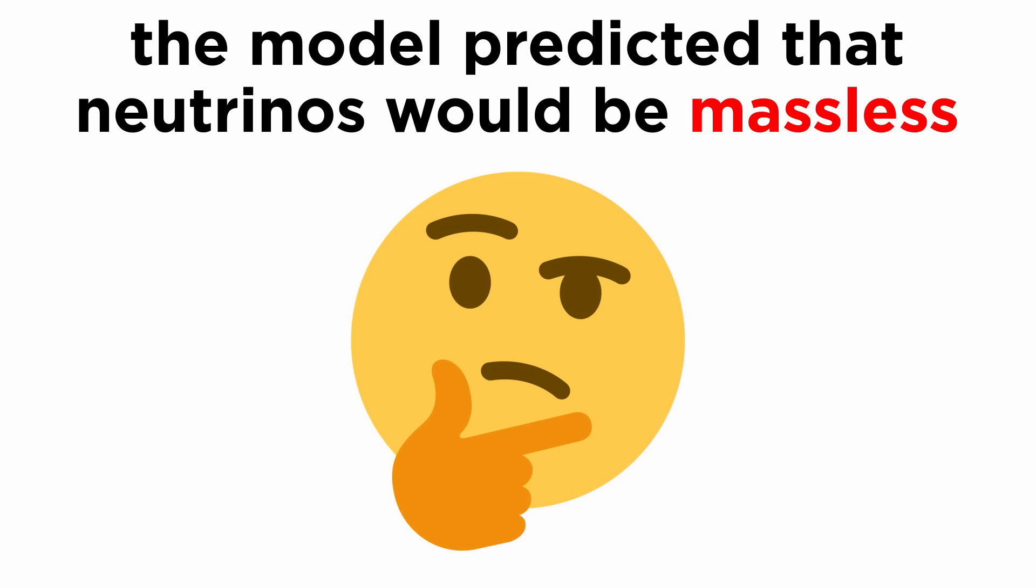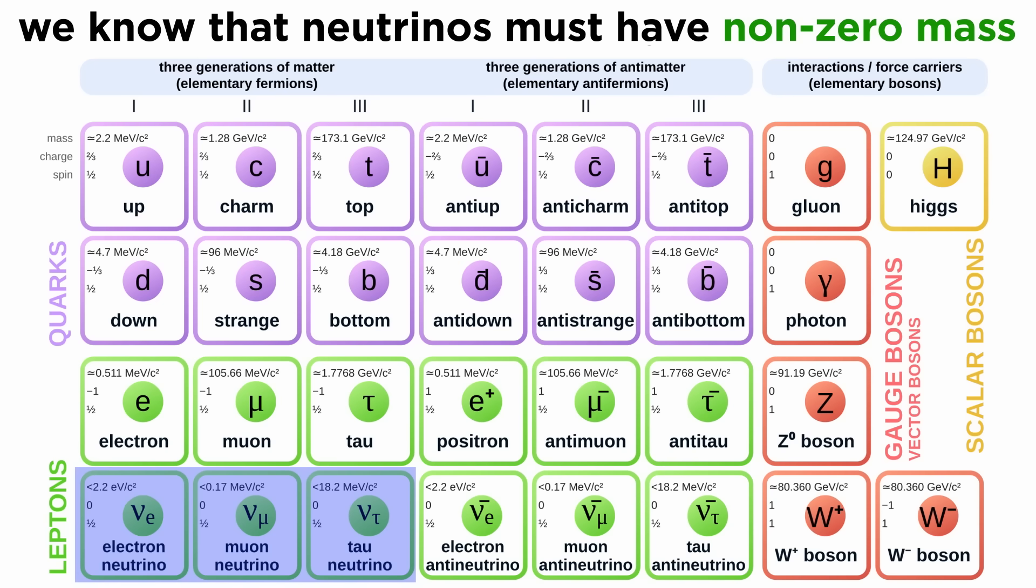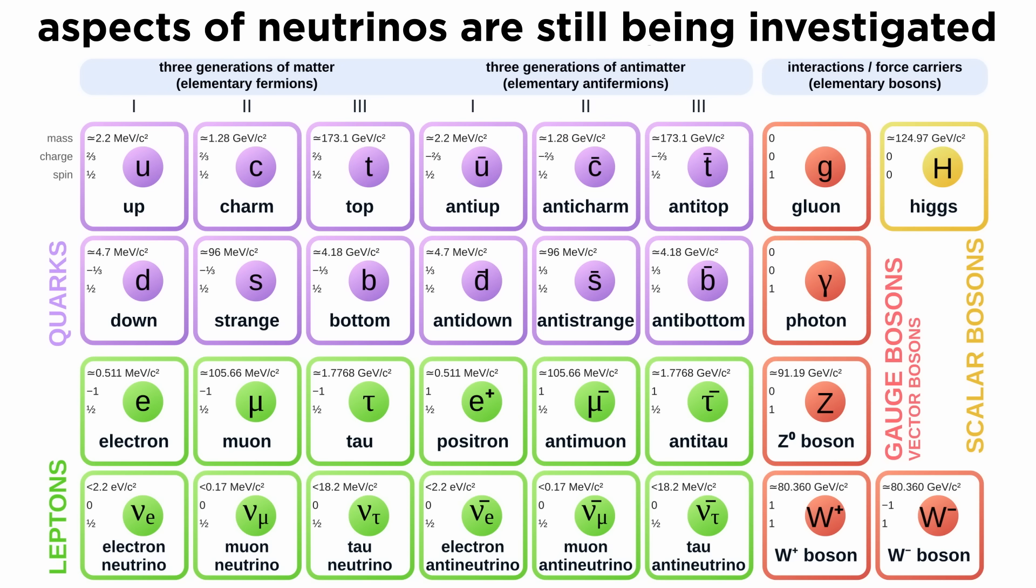According to the prediction of the standard model, the neutrino would have no mass. However, due to the observation of neutrino oscillations between different flavors as they propagate through space, it has been experimentally proven that the mass, although very small, is non-zero. There are also many ongoing experiments that are attempting to discover whether the neutrino is its own antiparticle, which would add to its intrigue. Both of these are examples of physics beyond the standard model, which we will discuss later.